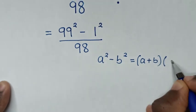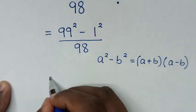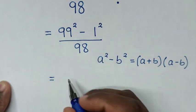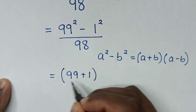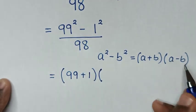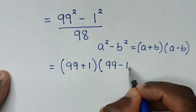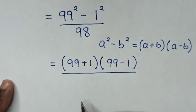It will be equal to (a + b), which is 99 plus 1, times (a - b), which is 99 minus 1, over 98.